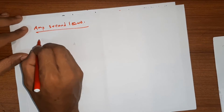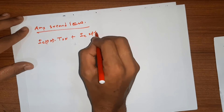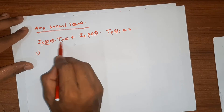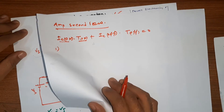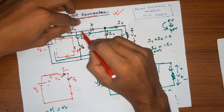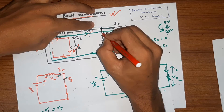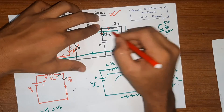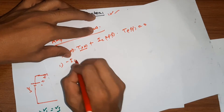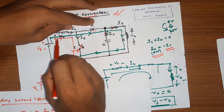Similarly, the ampere-second balance for the capacitor states that IC_on times T_on plus IC_off times T_off is equal to zero. This is the capacitor charge balance condition applied over one steady-state switching period.